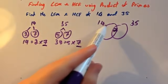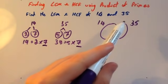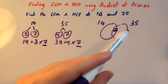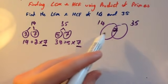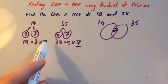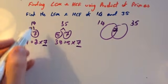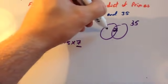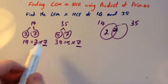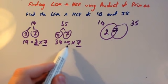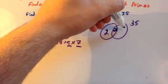We've now got a 7 in the 14 circle and also in the 35 circle — so we've accounted for both 7s. If they share one 7, you put one 7 in the middle; if they both have two 7s, you put two 7s in the middle. Now, 14 has got a 2, so you put the 2 on the 14 side. And 35 has got a 5, so you put a 5 over on the 35 side.